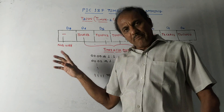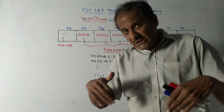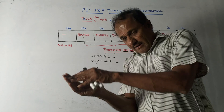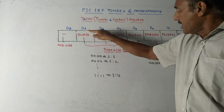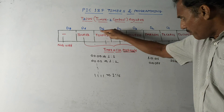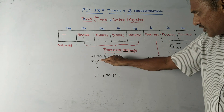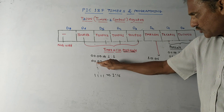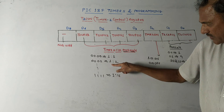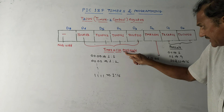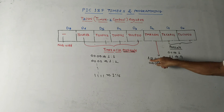Next is the Timer 2 control register. Compared to Timer 0 and Timer 1, the major difference is that in this case post-scale bits are also used - similar to pre-scale but applied after. Bit d7 is unused. Bits d6, d5, d4, d3 - a combination of these four bits indicates the post-scaling factor. For example, 0 0 0 0 gives post-scale 1:1; 0 0 0 1 gives 1:2; up to 1 1 1 1 which gives 1:16.